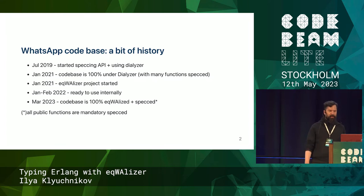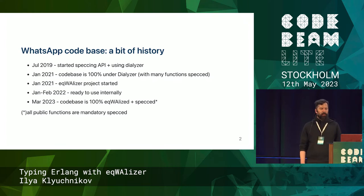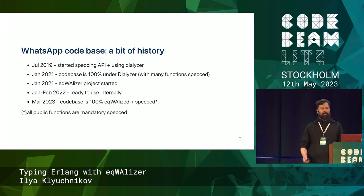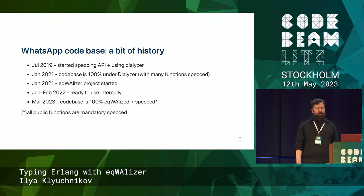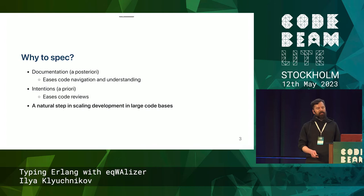This talk is about Eqwalizer, our type checker. It took us one year to make it ready for internal use. We started using it internally, and a few months ago we got 100% of our code base under Eqwalizer, with all public functions specced with types and specs. In this talk I will describe why we did it, how we did it, and a little bit of the industry landscape of what happened in similar languages.